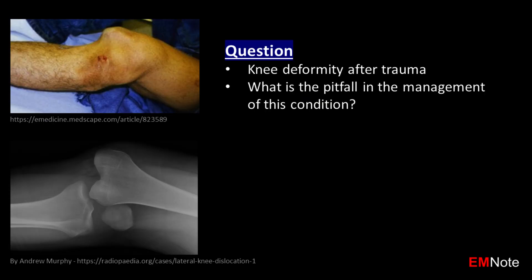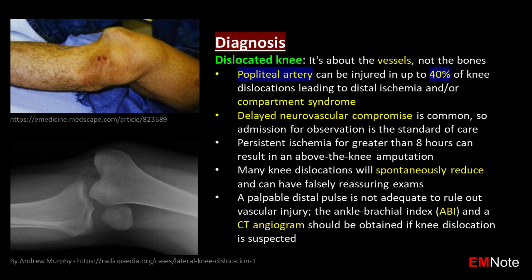This patient suffered from knee deformity after trauma. The diagnosis is knee dislocation. Keep in mind that knee dislocation is about the vessels, not the bones. The popliteal artery can be injured in up to 40% of knee dislocations, leading to distal ischemia and/or compartment syndrome.